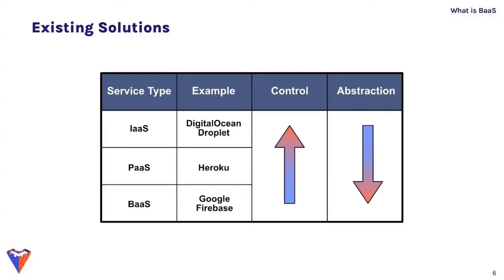Another option is a backend as a service product like Google Firebase that generates a pre-built backend so engineers don't have to worry about backend code at all. This provides the highest degree of abstraction and lets Fortress IO get their product to market fastest. The trade-off, however, is that Fortress IO engineers are no longer in control of their backend — not even the code — meaning they can't customize it if they need to implement new features in the future.